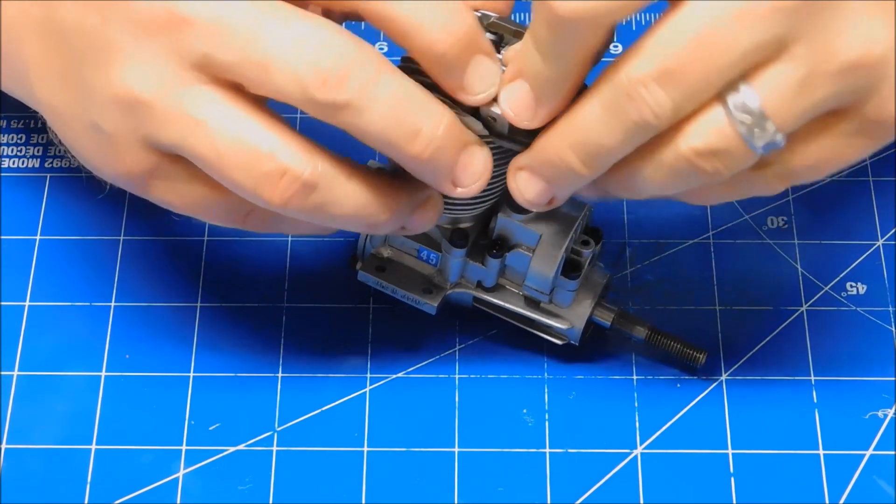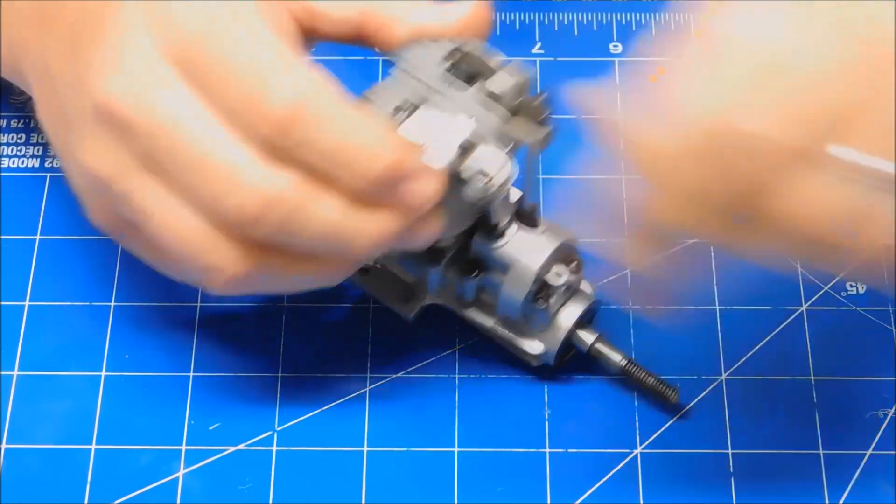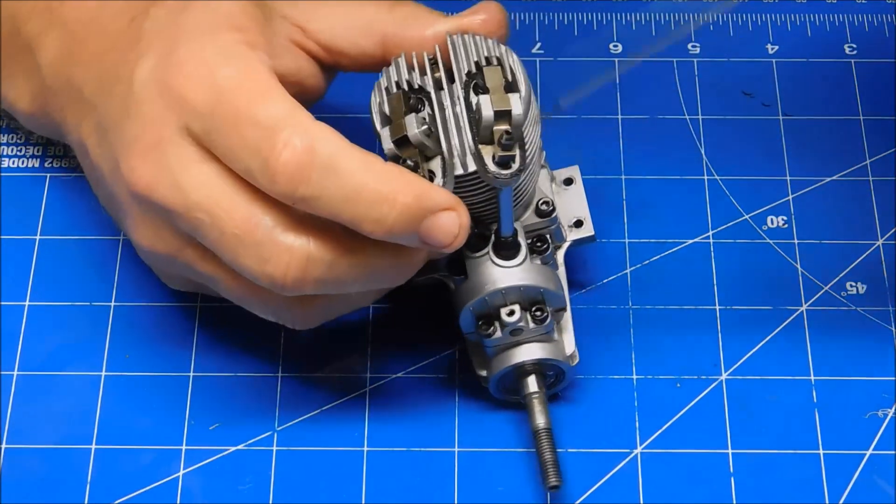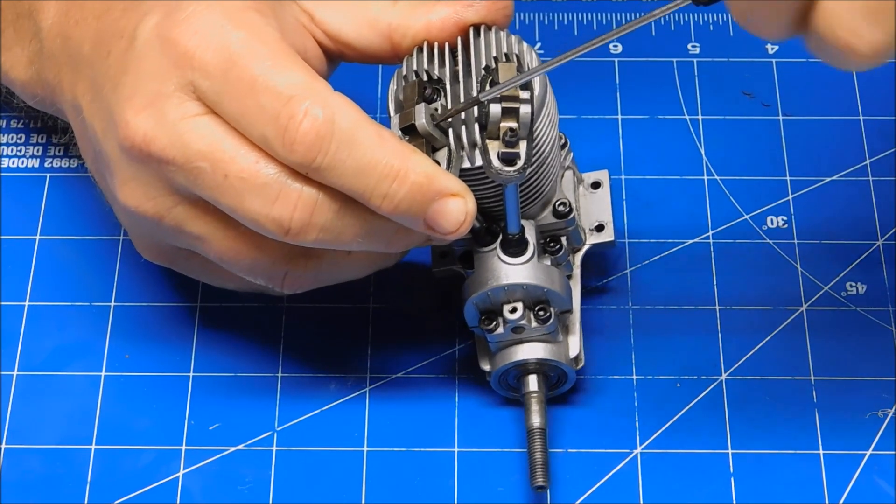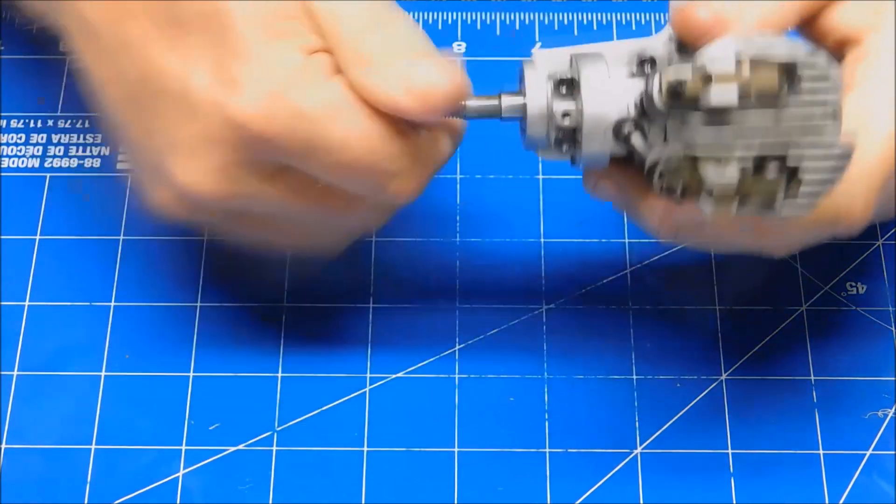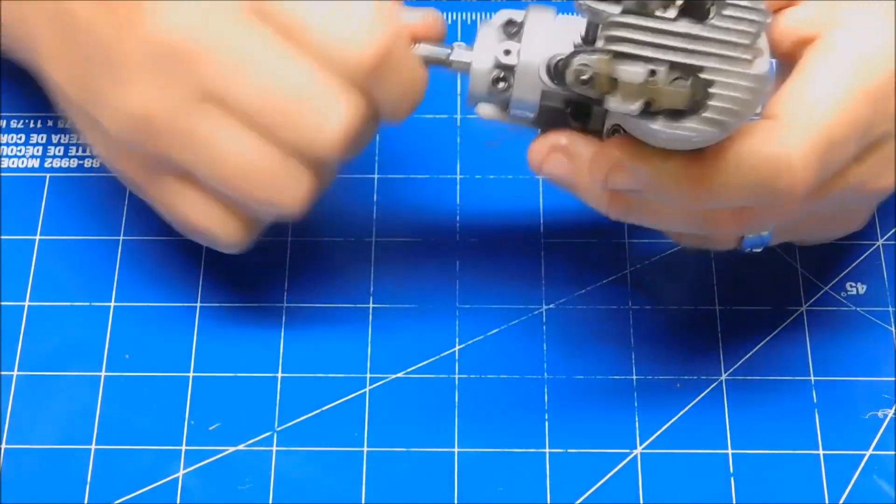It should just slide in. There it goes. The rocker cover is going to keep those things from coming out anyway. There we go. Now the rocker arms are installed.